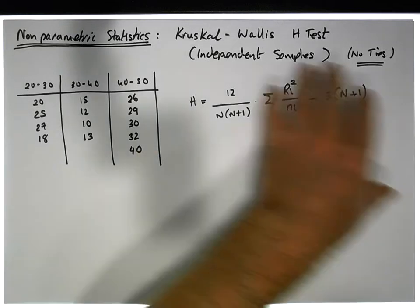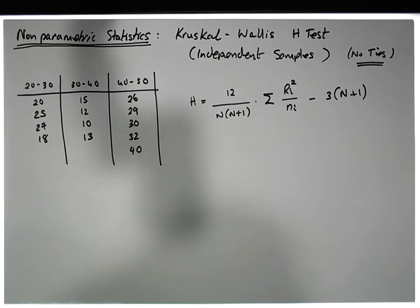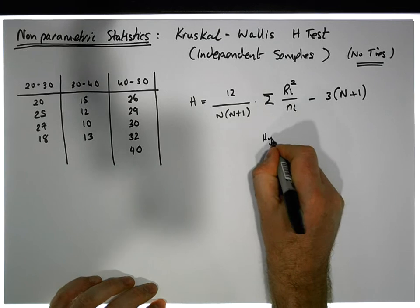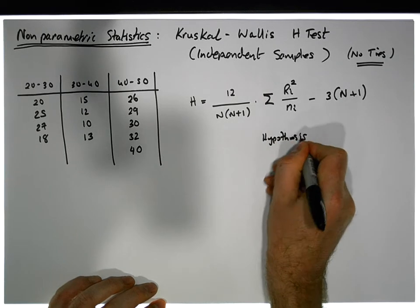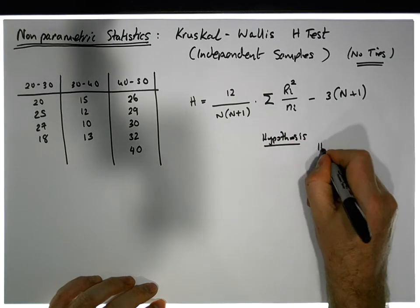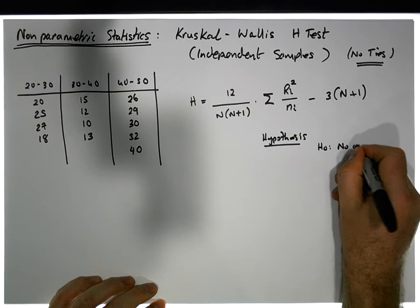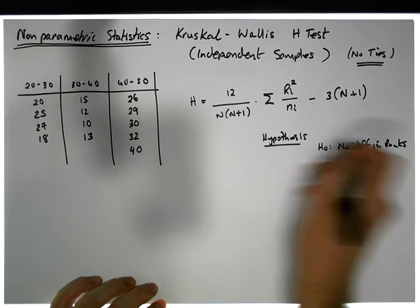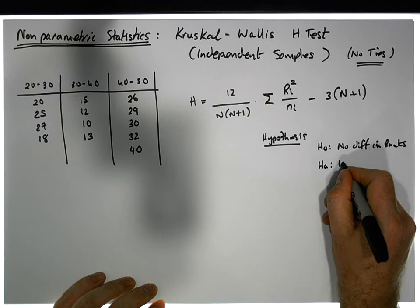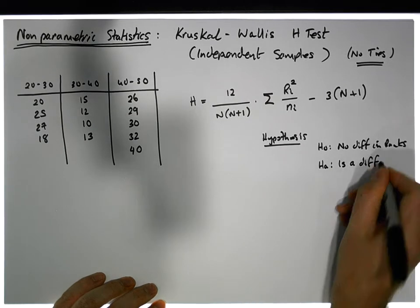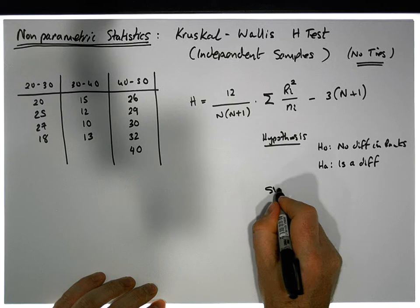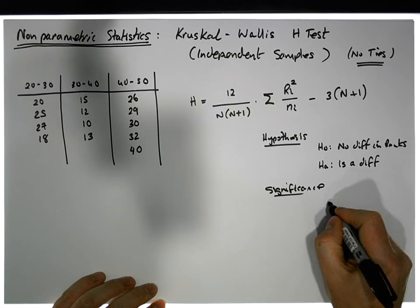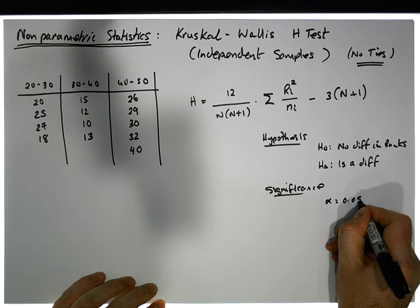And this is what we're going to be testing for. A hypothesis, the hypothesis. And the null position, H0, is that there's no difference, no difference in the ranks of the groups. And HA is that there is a difference. There's a difference somewhere. And the significance level for this test, we'll set the significance at alpha is equal to 0.05.